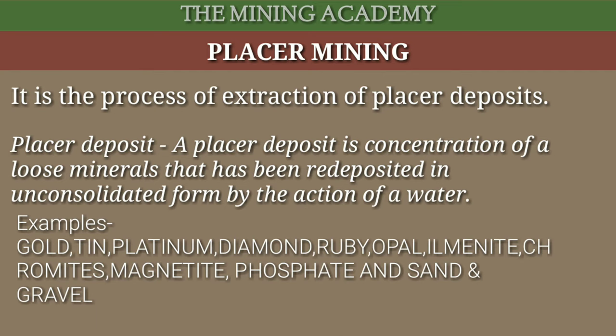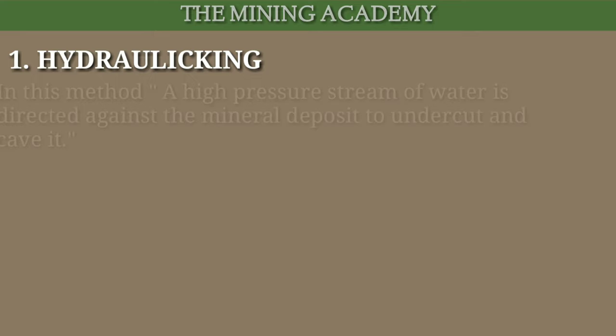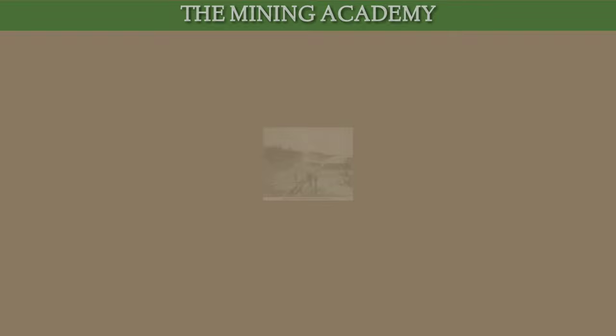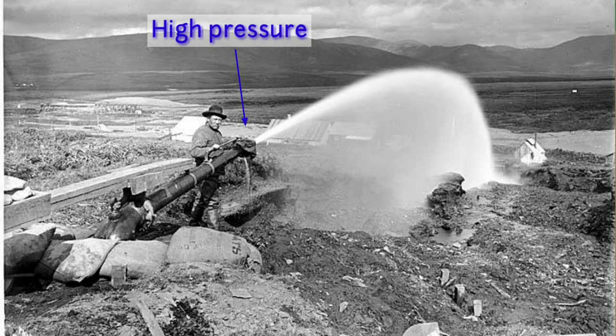Placer mining do categories mein classified hai: pehla hydraulic mining, doosra dredging. Baat karte hain hydraulic mining ki. Is method mein placer deposit ka extraction high-pressure water stream se hota hai. Is method mein material ka excavation aur material handling dono hydraulic hi hota hai. Saath hi saath ismein pahle se blasting ya drilling ki zaroorat nahi hoti — sabhi cheez water ke help se hoti hai. Is method mein reclamation production cycle mein hi include rehta hai.